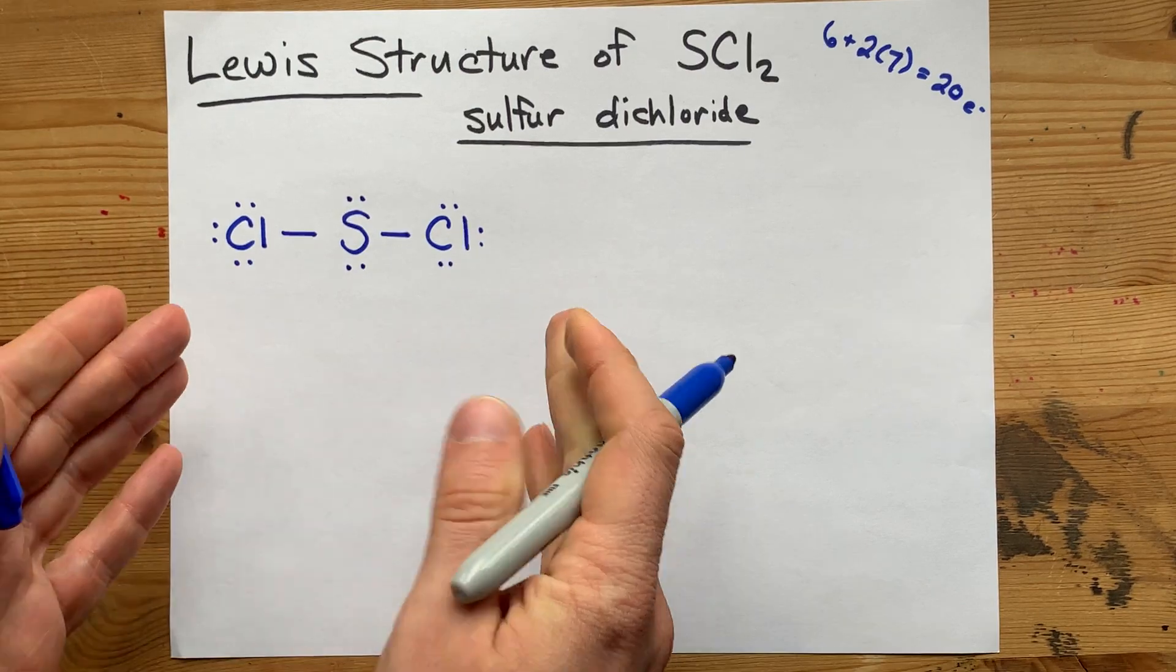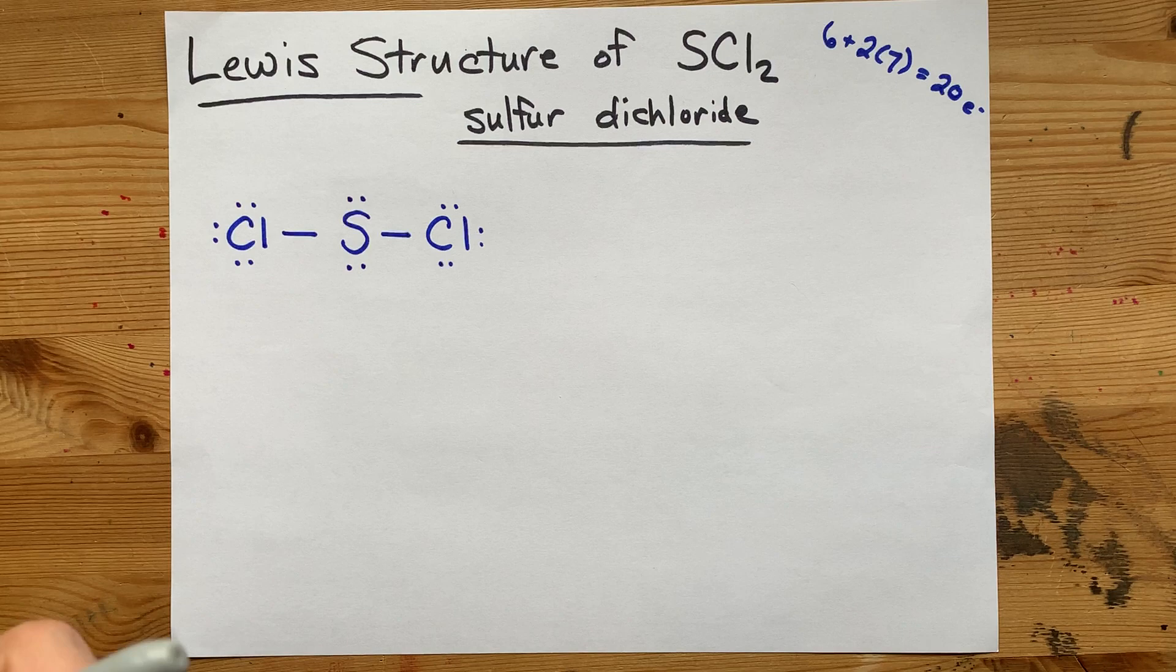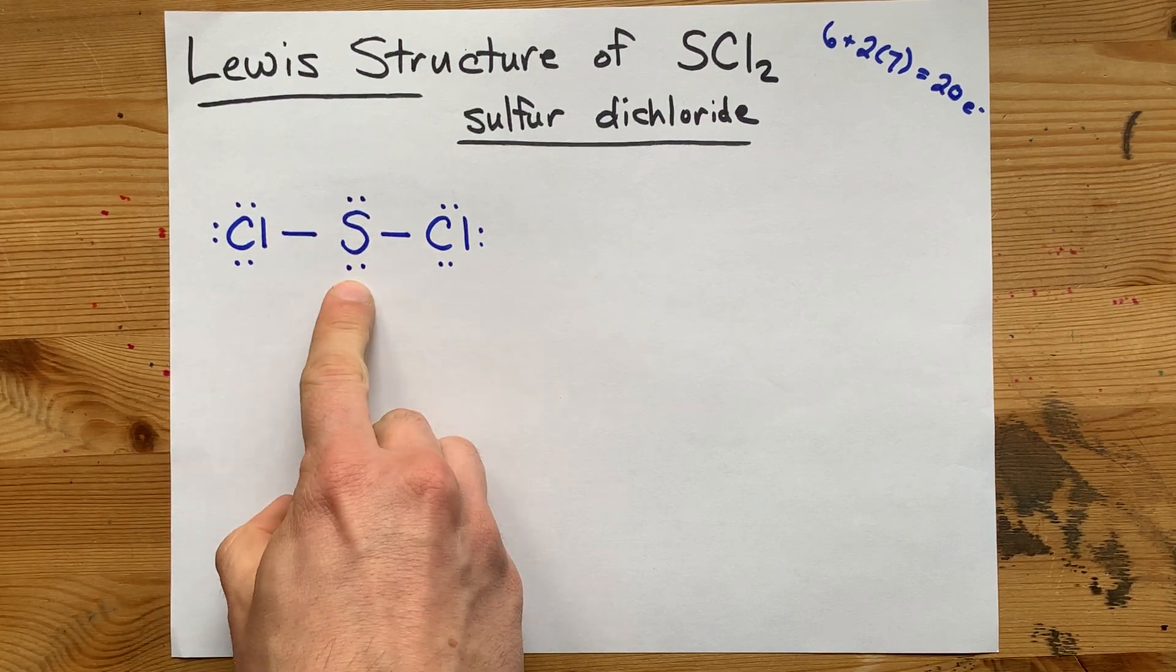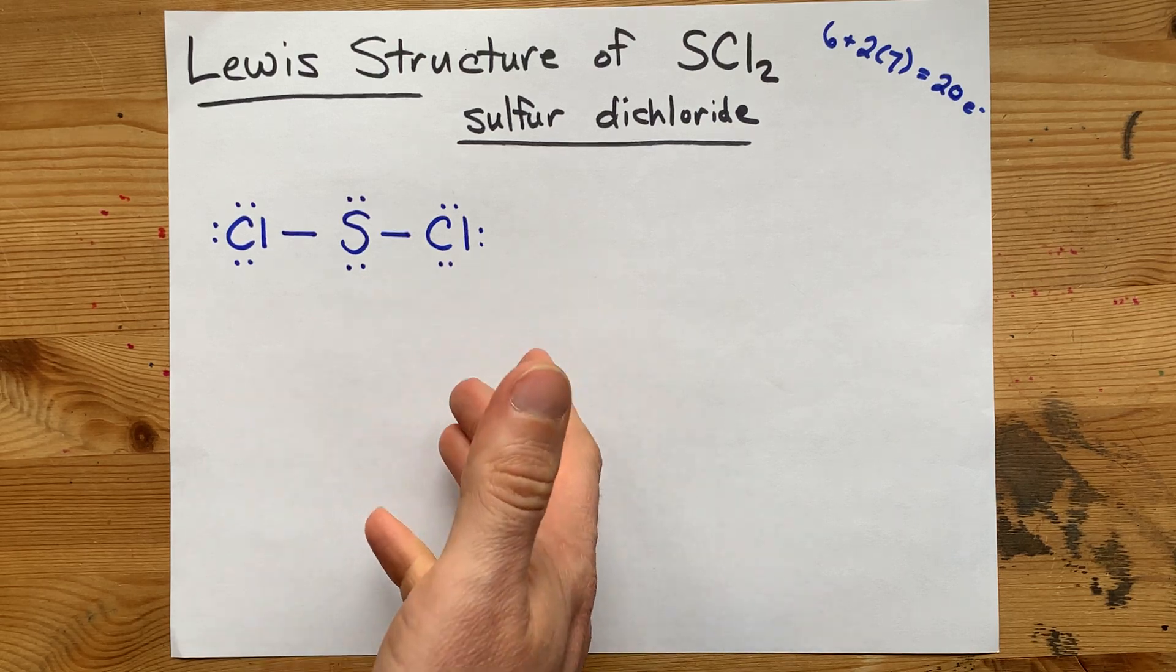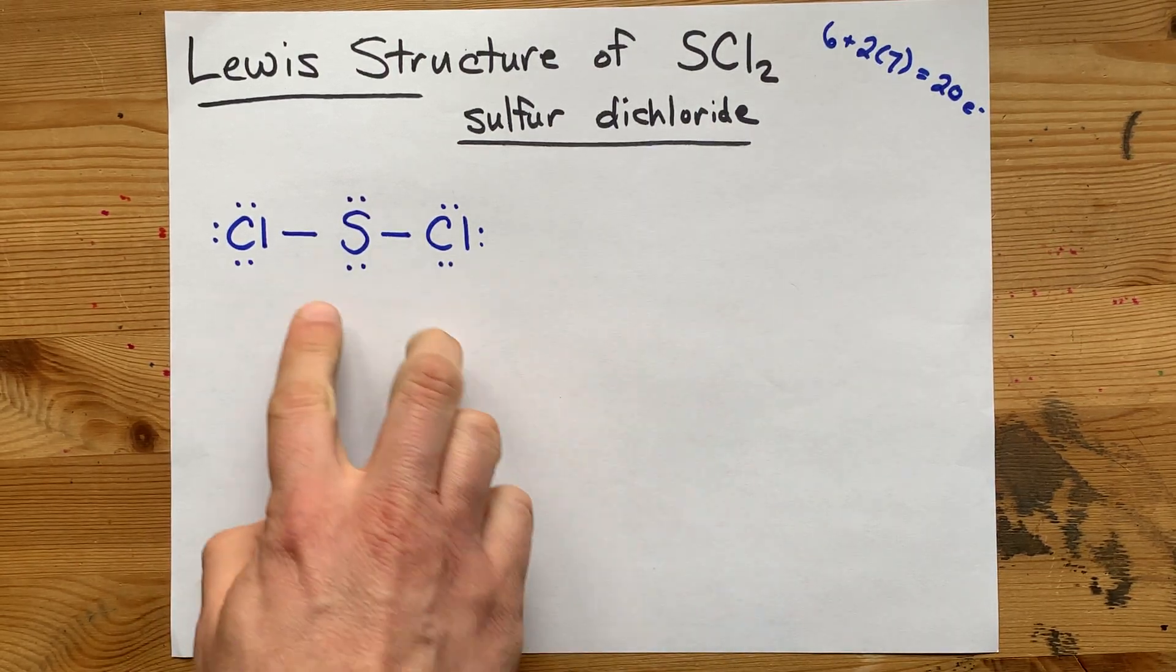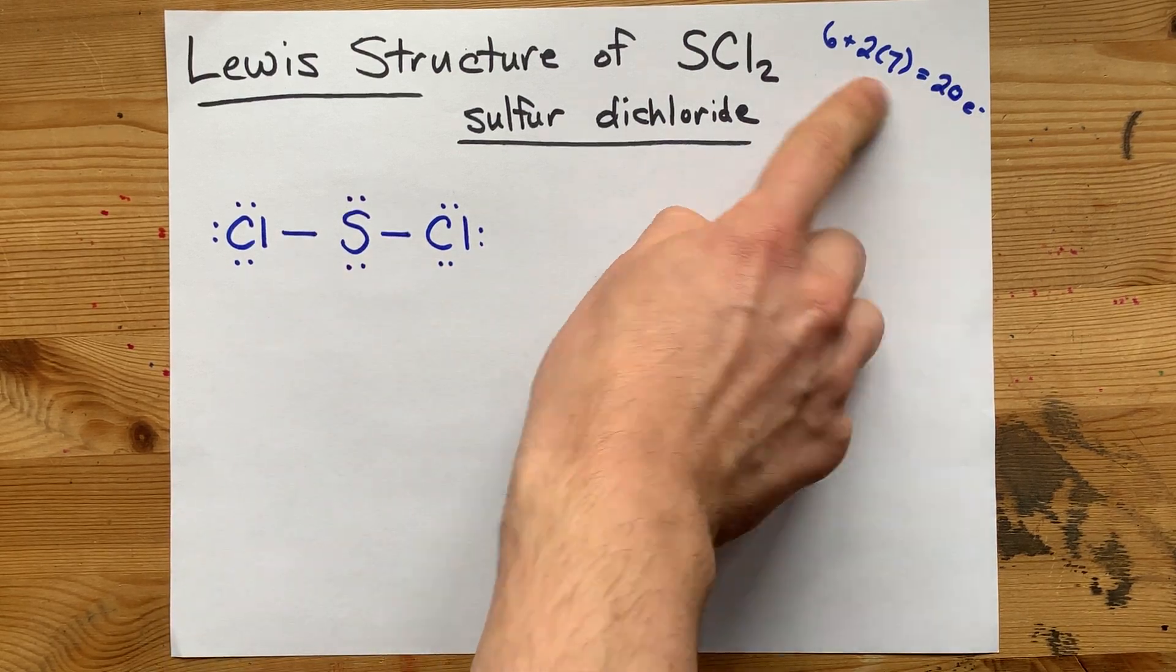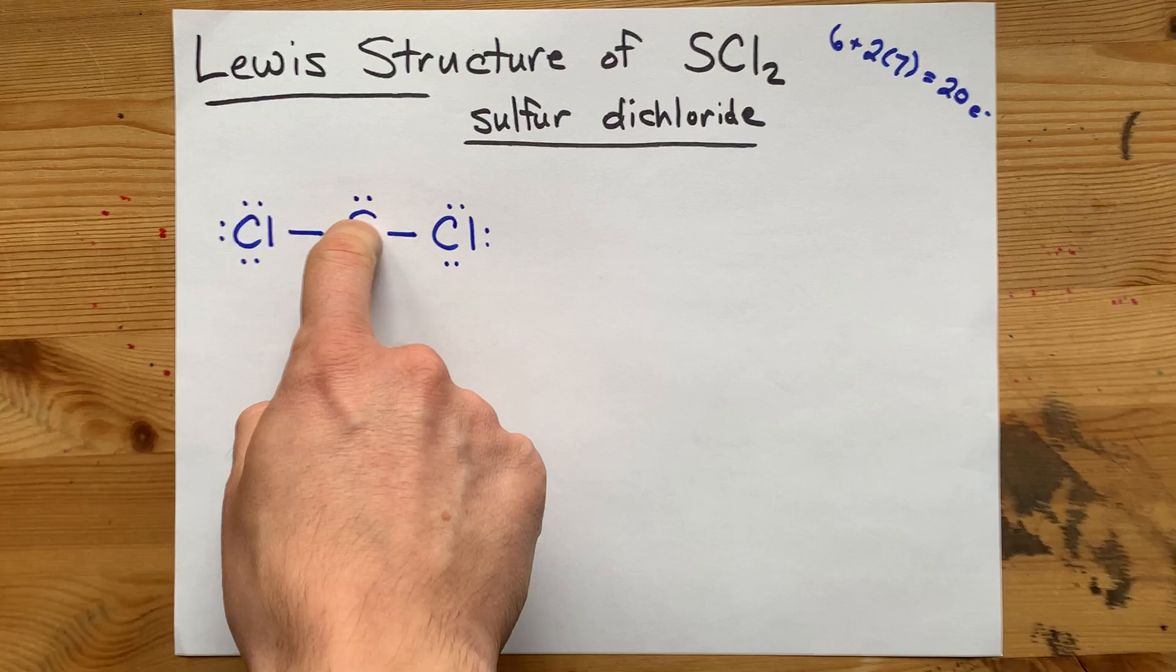Now, actually, the octet on my sulfur is also complete. I have one, two, three, four, five, six, seven, eight electrons around that sulfur, and I'm done. Octet rule is satisfied for all of the atoms. I've got them bonded together. I've got the right number of valence electrons. This is it. There's your Lewis structure.